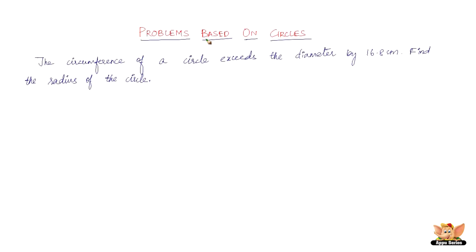Let's continue solving problems based on circles. The problem is: the circumference of a circle exceeds the diameter by 16.8 centimeters — find the radius. The circumference is 16.8 centimeters more than the diameter. So if circumference is C and diameter is D, then C equals D plus 16.8.